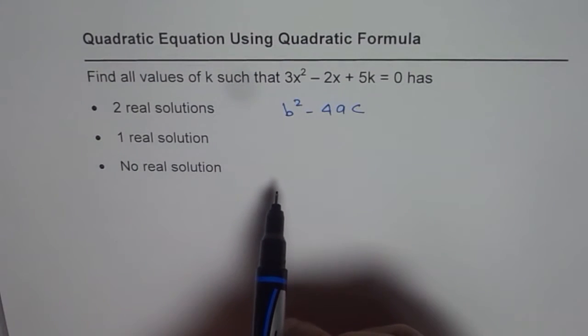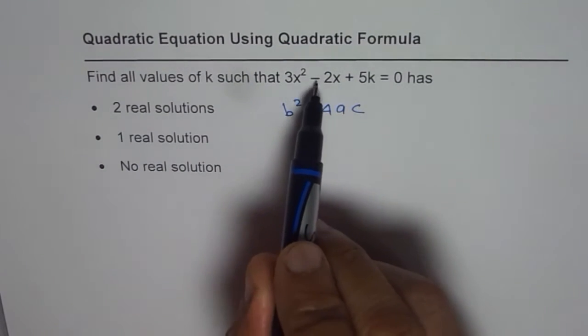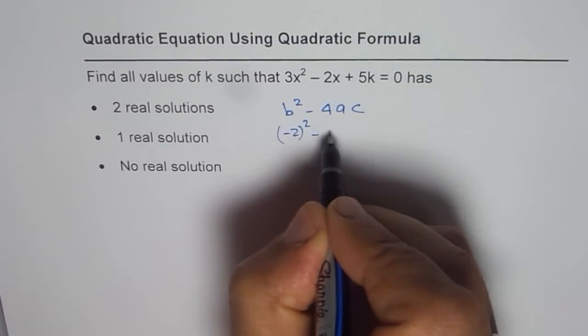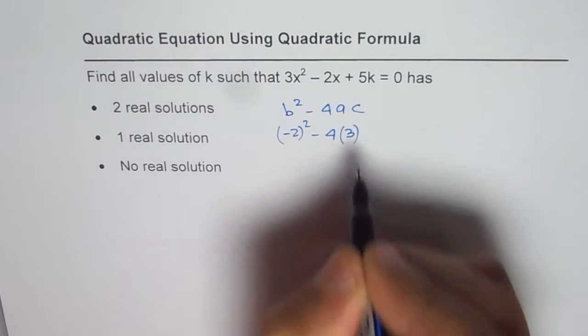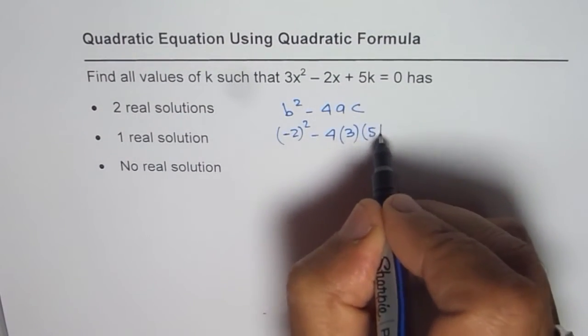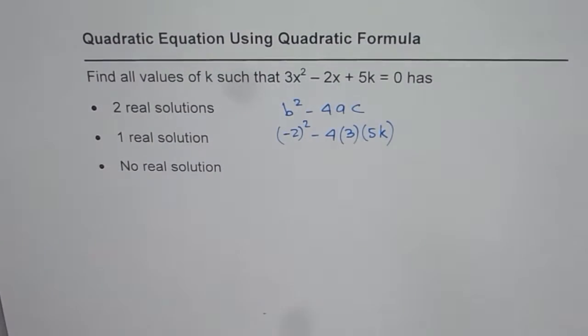So for the given equation, what is b? b is -2. So we can write (-2)² - 4 times a is 3 and c is 5.